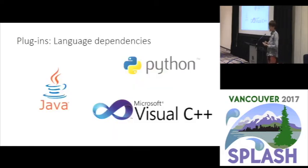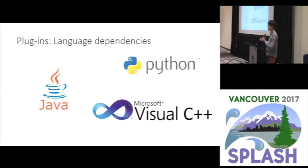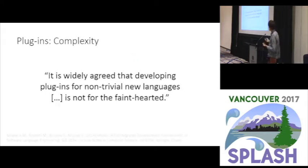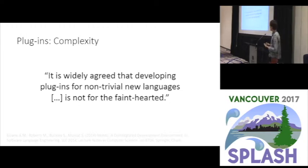Another problem is language dependencies. If you have a Java tool you need to write your plugin in Java; if you're working with a Python tool you have to write in Python. So even if you have a plugin you'd ideally like to ship with your language and plug into the frontend you're using, depending on which language your frontend uses you will have to re-implement it. There is also the complexity — citing an SLE paper from a few years ago: it is widely agreed that developing plugins for non-trivial new languages is not for the faint of heart, especially with complex layout algorithms and complex mappings between abstract syntax and concrete syntax.